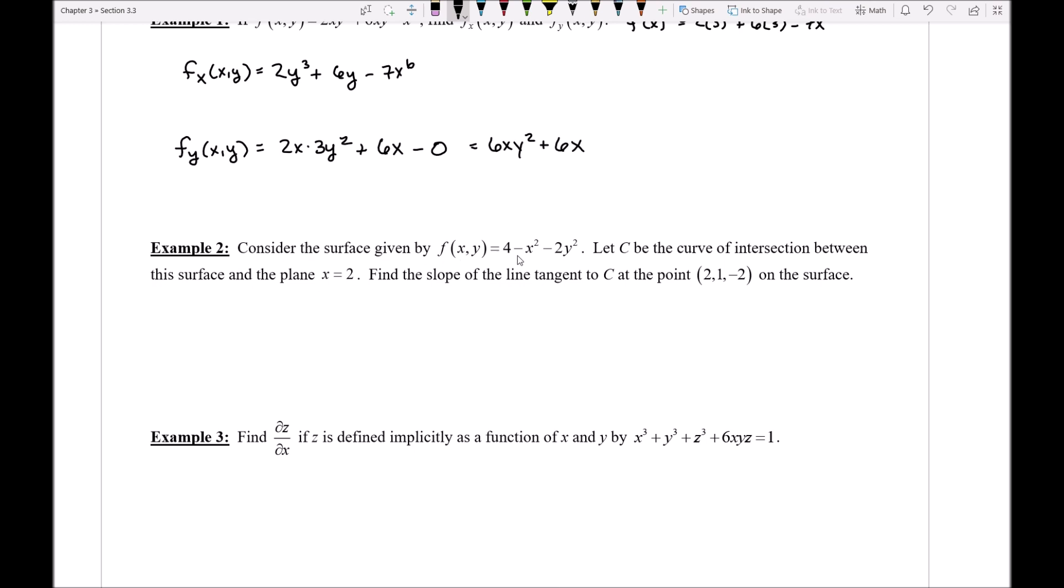So let's pretend here that we have this surface given by f equals 4 minus x squared minus 2y squared. Now I don't know what that surface looks like at the moment, but that's not even really the important part.